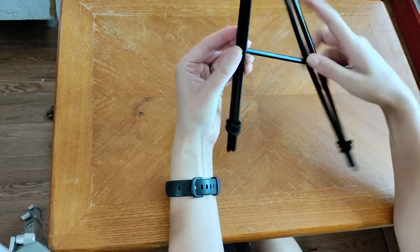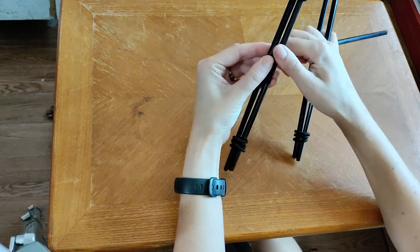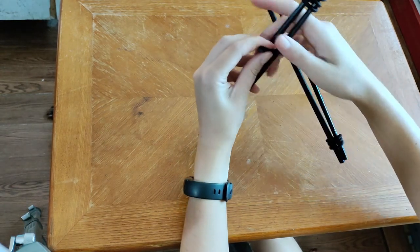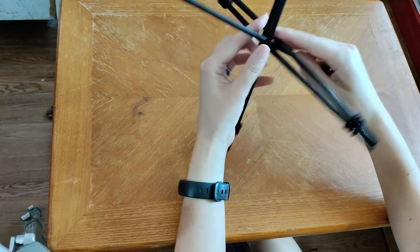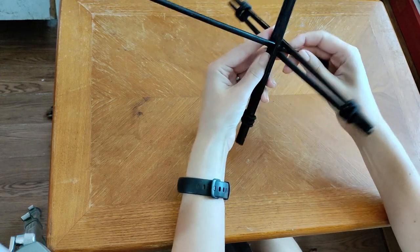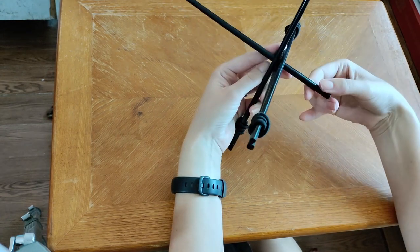And then the other one lays on top. I like a bottom whorl Turkish spindle, so I slide it towards the other end.